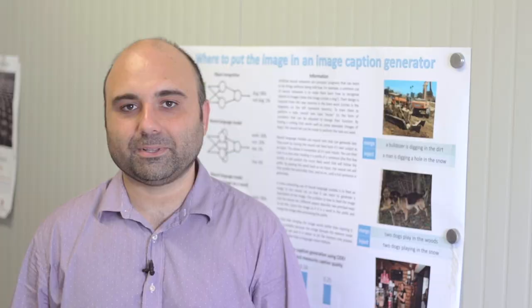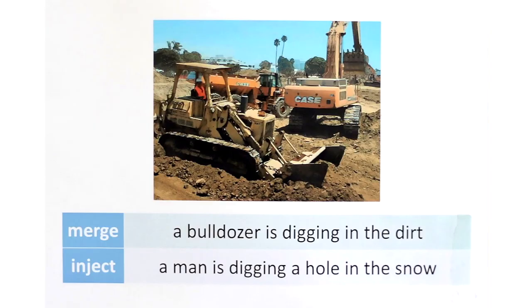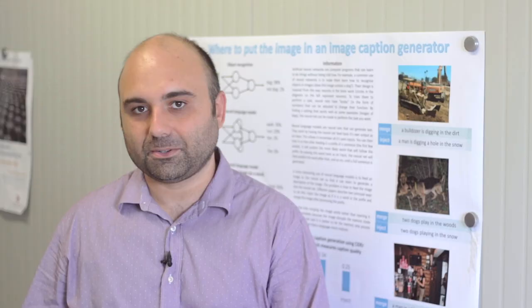The neural network doesn't only have to say yes or no — it can also say a word, for example, dog or cat. And it can also say several words which form a sentence, for example, a dog walking in a field. And so that would be a description of an image.